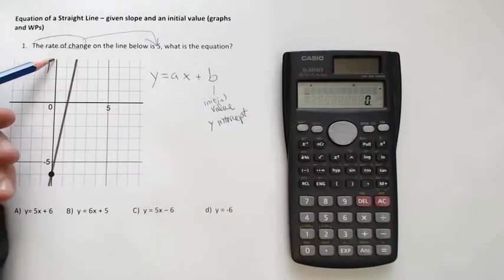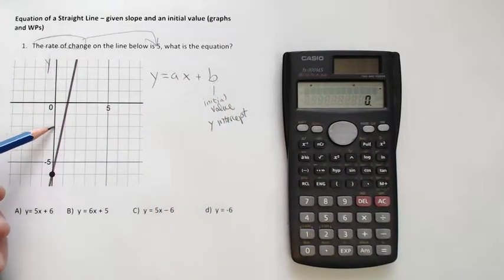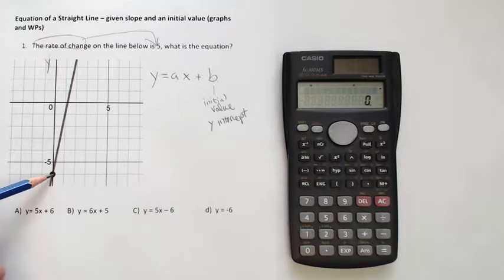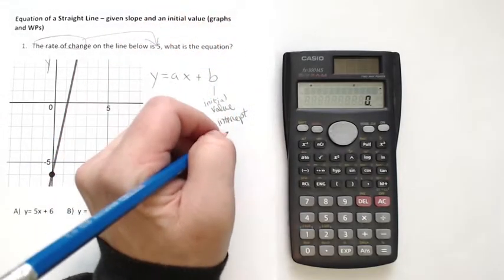Really easy, just find the y-axis, come down the line, negative 5, negative 6. There it is right there. My b in this case is negative 6.